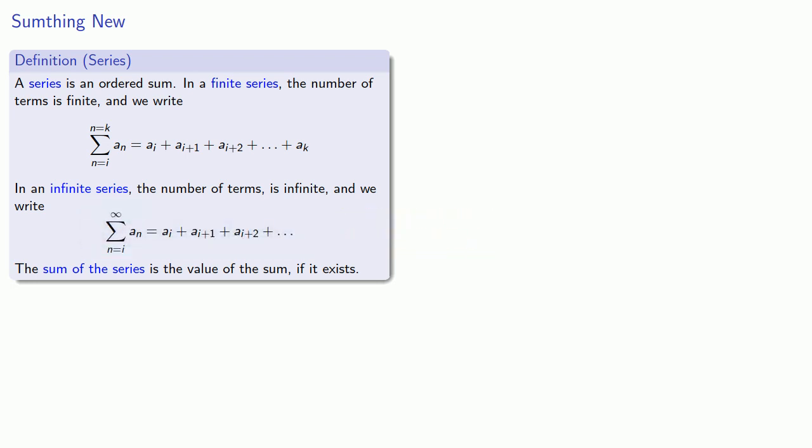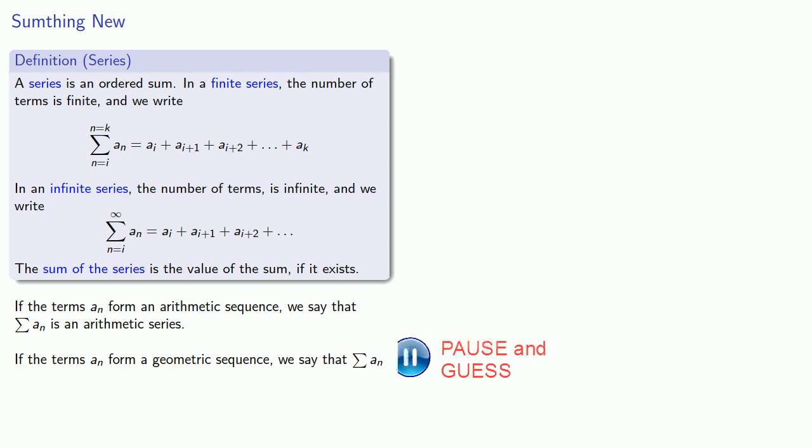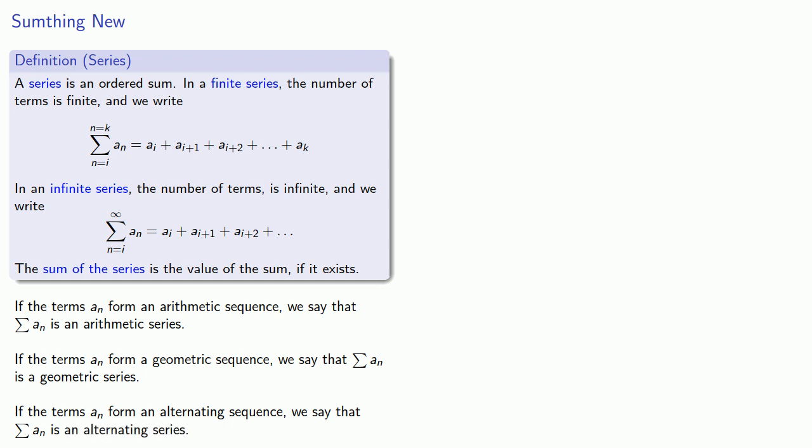Since a series is an ordered sum, then the terms of that sum form a sequence. If those terms form an arithmetic sequence, we say that the sum is an arithmetic series. If the terms form a geometric sequence, we say that our sum is a... wait for it... alternating series.